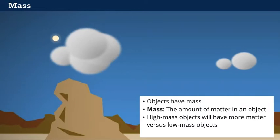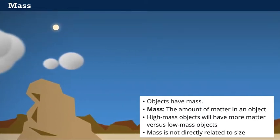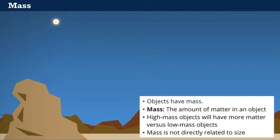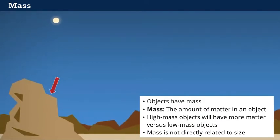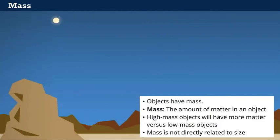High-mass objects will have more matter versus low-mass objects. It's important to know that mass isn't directly related to size. Think about something like a large boulder. It's very hard to move, isn't it? What about a cloud that's the same size as your boulder? A well-placed gust of wind might just be enough to move the cloud, but it wouldn't budge the boulder one bit. This resistance to movement is what makes the boulder massive. The cloud, on the other hand, is not massive, even though it's still quite large.